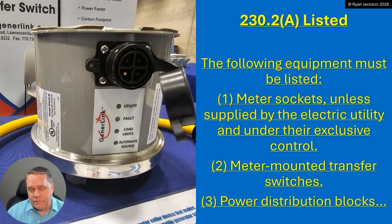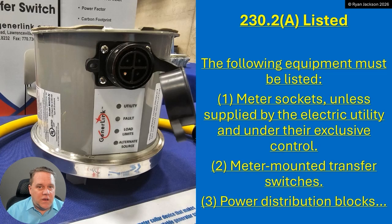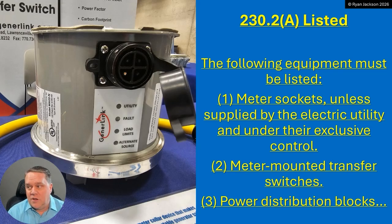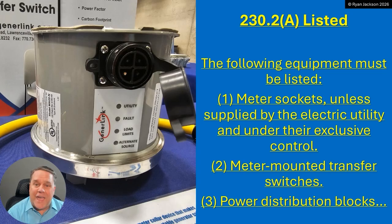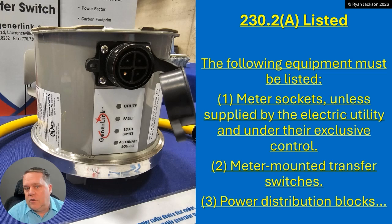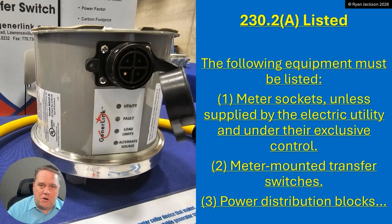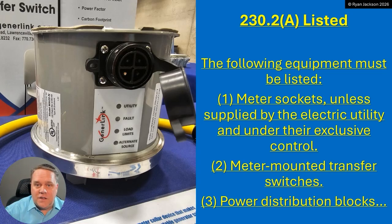Contrary to popular belief, not everything in the NEC has to be listed. In fact, a lot of stuff doesn't — motors, transformers, panel boards, switchboards, switchgear. In the 2026 code, if you go to Annex A, they actually broke it up into two parts: product standards for equipment that's required to be listed and product standards for equipment that are not required to be listed. So if you ever get in a fight with somebody that says everything has to be listed, show them Annex A where it specifically says here's stuff that doesn't need to be listed.